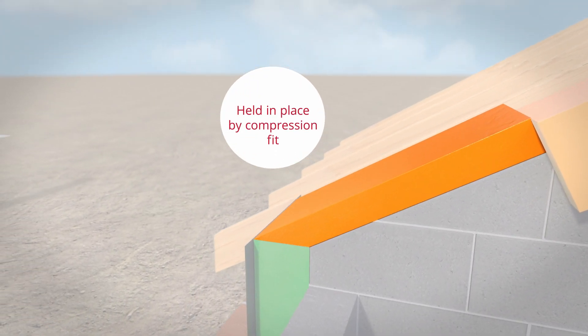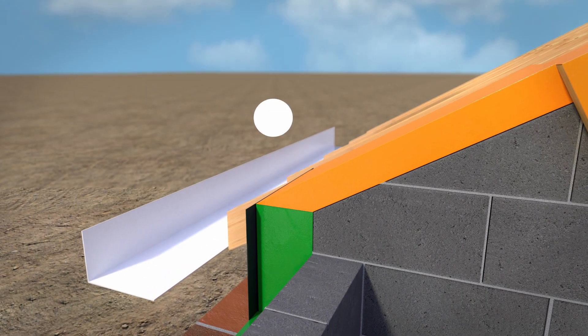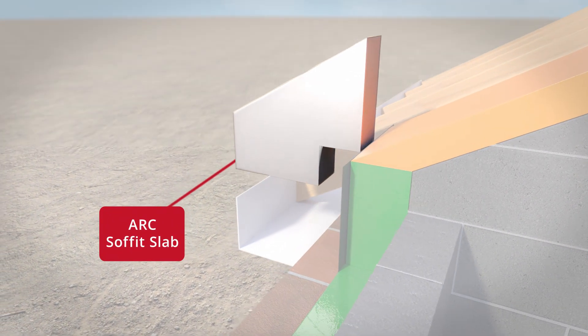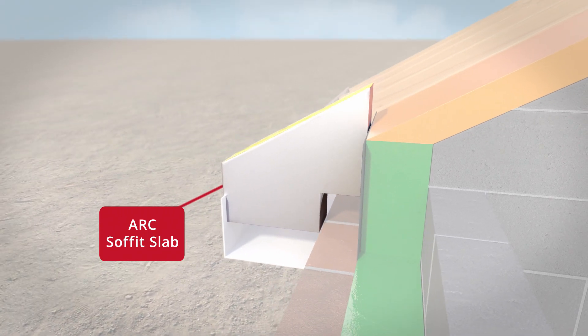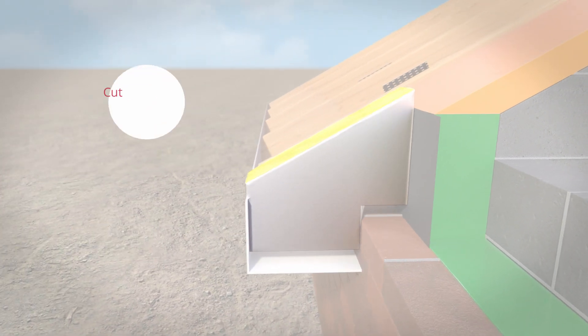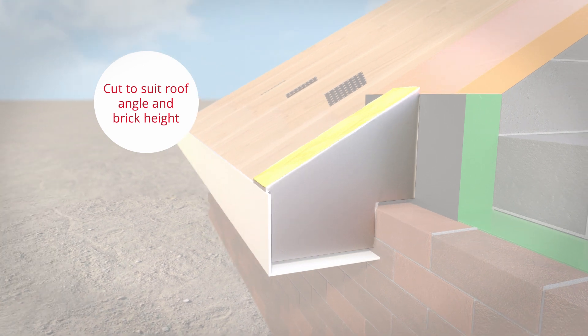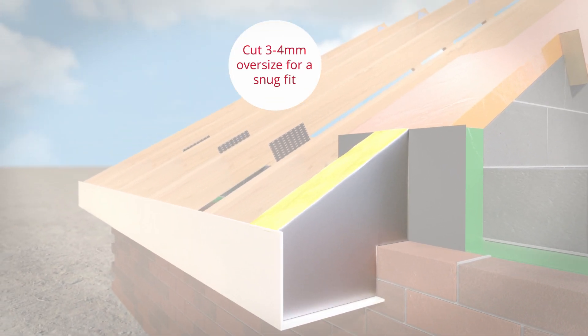All joints must be butted up tightly to ensure no gaps remain. The Arc Soffit Slab delivers fire stopping protection within the soffit, and is simply cut to size to fit the roof angle and block height to ensure a snug fit.